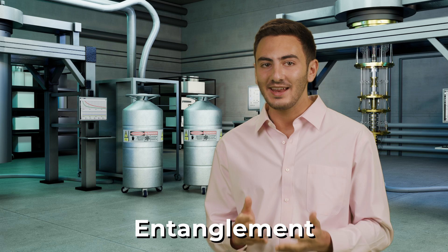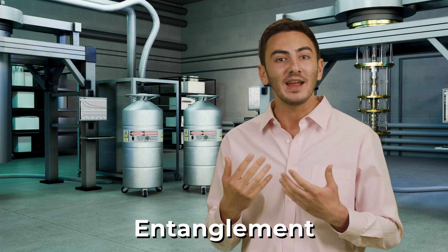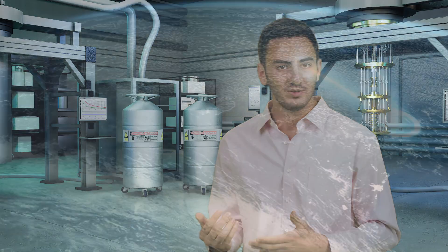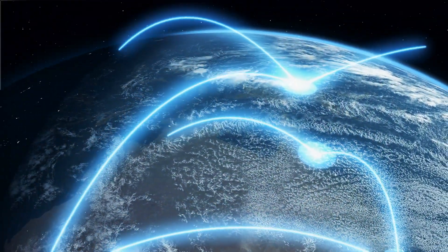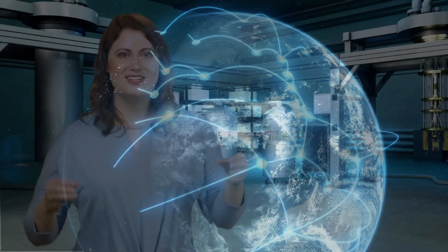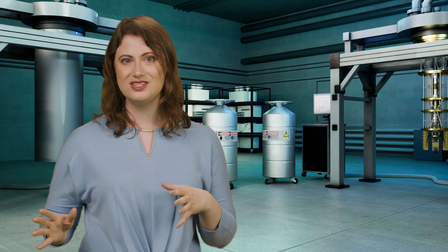Quantum entanglement is how we connect qubits together, which is how we're able to get such incredible computing power from quantum computers, and how we can send information perfectly securely using quantum communication. Next time, we'll talk about how quantum entanglement works, and how we're using it to make revolutionary technology.